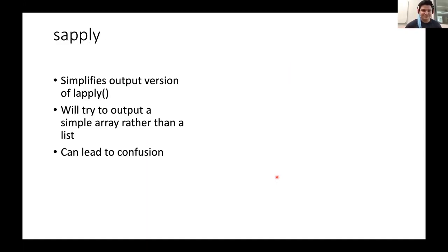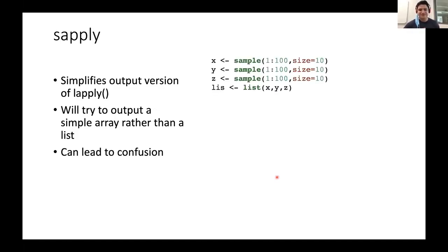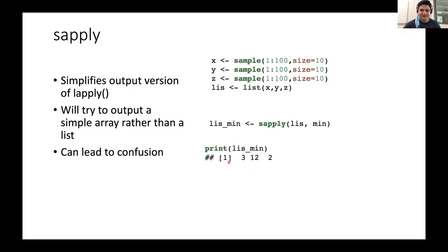There's a sister function called sapply(), which gives a simplified output version of lapply. Rather than returning a list, it tries to simplify the result to an array-like object. Using sapply(list, min) on the same list, we get the same minimum values (3, 12, 2), but now the structure shows an integer vector rather than a list. Be aware that sapply can lead to confusion if your input list isn't in the right format. In summary: lapply outputs a list; sapply outputs a simplified vector or array.